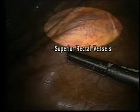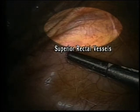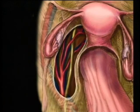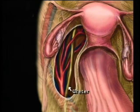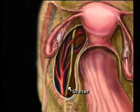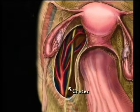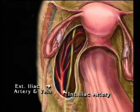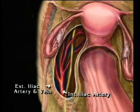The superior rectal vessels are also seen medial to these structures. This illustration depicts the relationship of the pelvic ureter to the iliac vessels and the anterior branches of the hypogastric artery. The ureter is most easily identified at the pelvic brim, where it crosses over the bifurcation of the common iliac into the external iliac and internal iliac arteries.